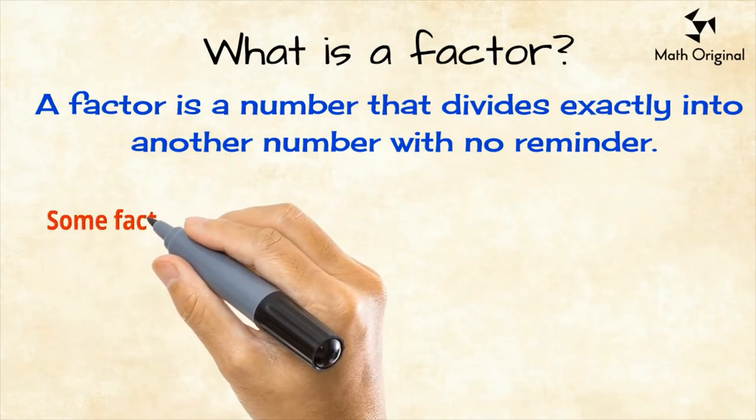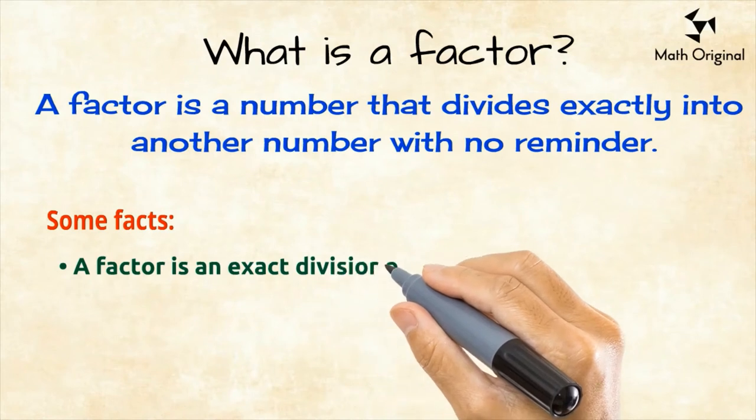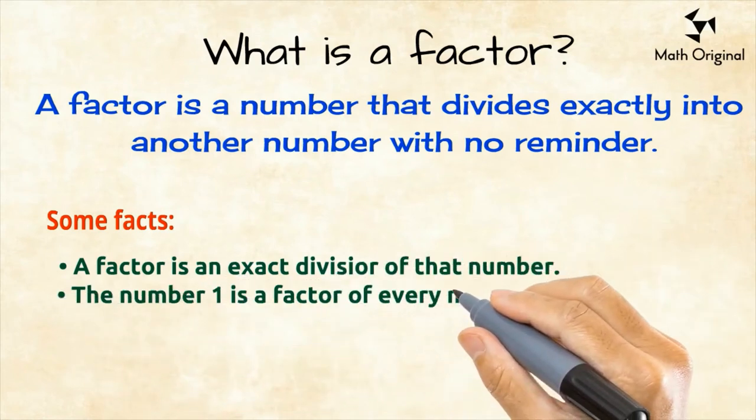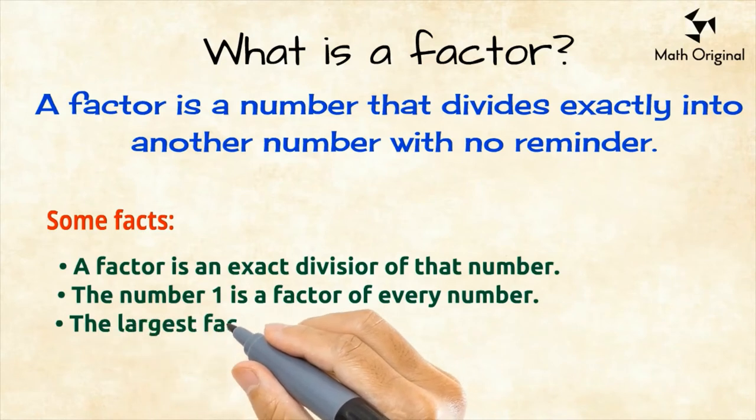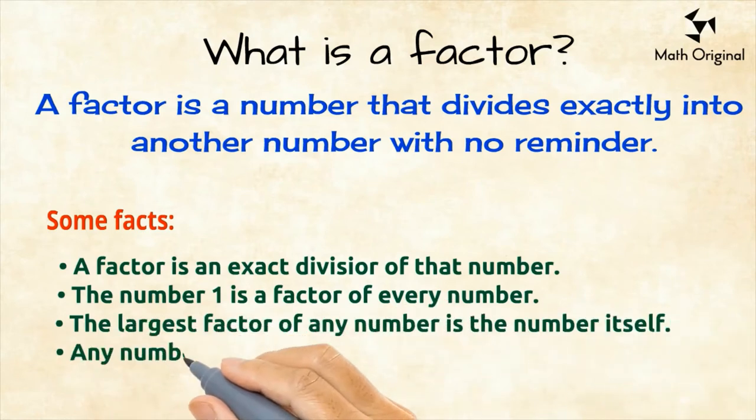Let's highlight some facts. A factor is an exact divisor of that number. The number 1 is a factor of every number. The largest factor of any number is the number itself. Any number is a multiple of all of its factors.